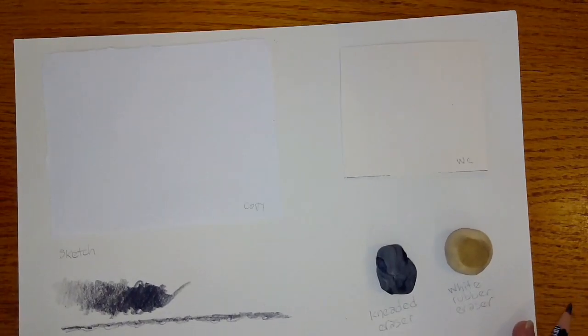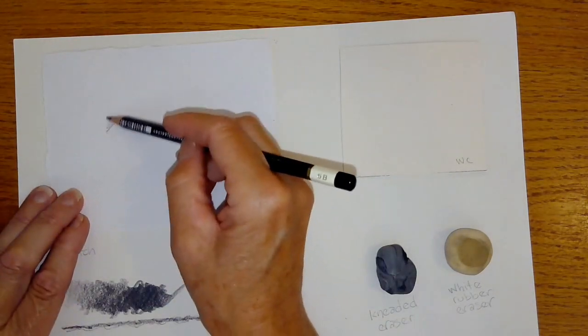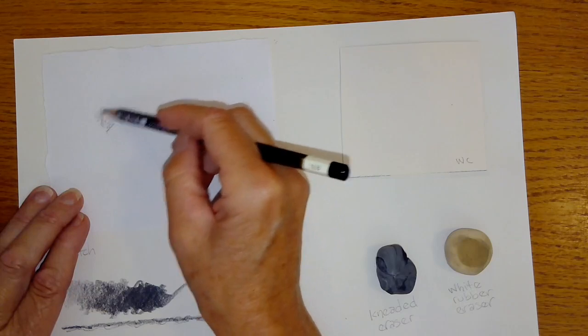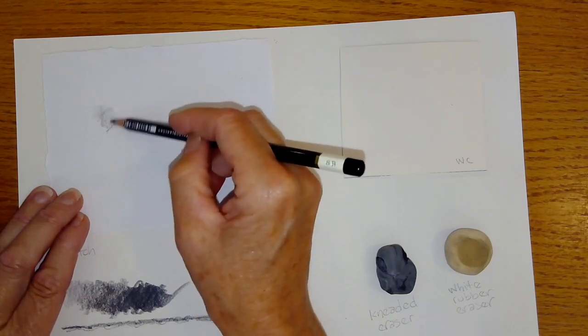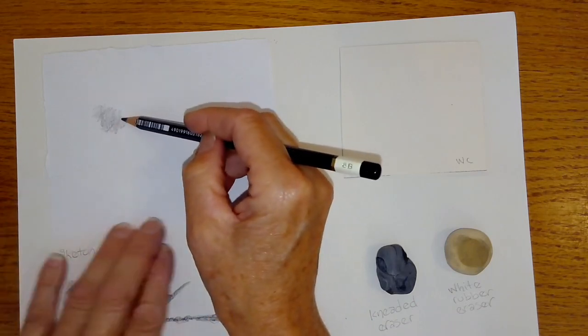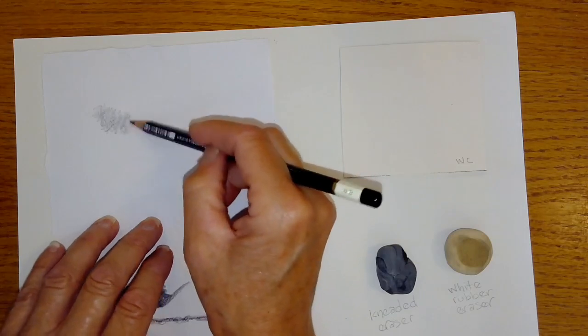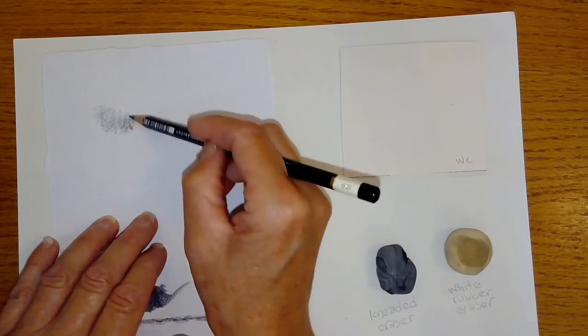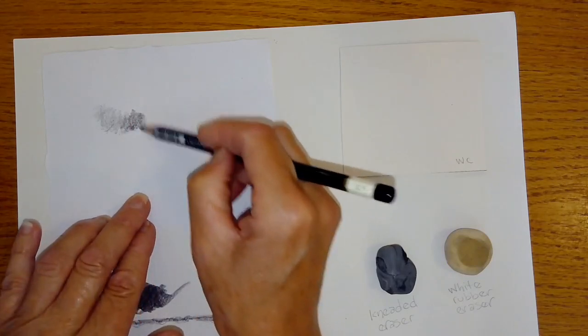I'm going to move on to copy paper. Same approach, light application first, and you can definitely see some texture on the paper. Copy paper of the three of these that I have is definitely the smoothest. I can feel that with my pencil, I can feel how smooth it is.